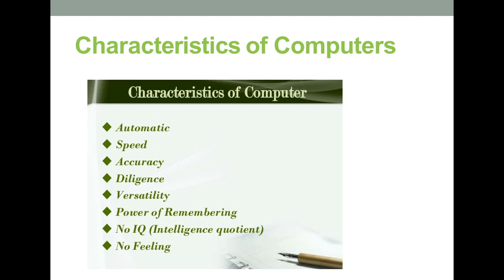Characteristics means the features of computer. These features are: automatic, speed, accuracy, diligence, versatility, and power of remembering. These are also the advantages of computer. The disadvantages include no IQ and no feelings. These characteristics have made the computer so powerful and universally useful. Let us discuss them briefly.